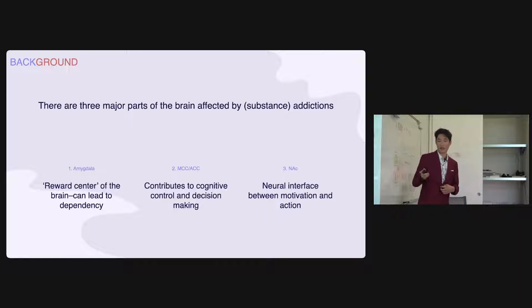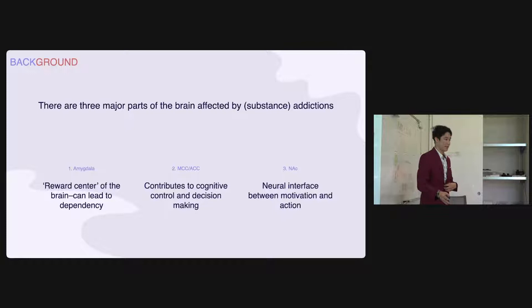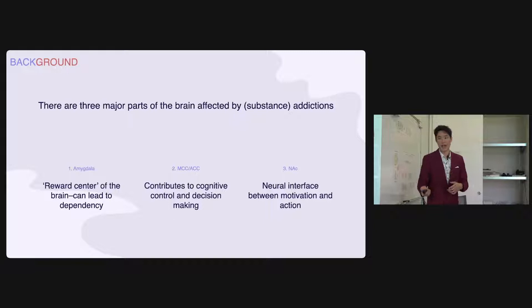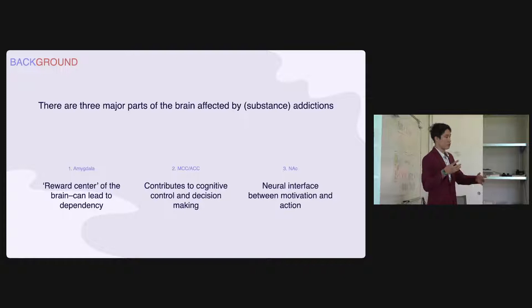Second is the mid-cingulate cortex and the anterior cingulate cortex — the MCC-ACC. These contribute to cognitive control and decision making. The MCC-ACC is what tells you whether to pick up your phone or go out with your friends, and it's part of being able to disconnect yourself from something you're currently using. This is why it's hard for me to play video games and then do homework — because my brain has been tuned to play video games. Finally, the nucleus accumbens is the neural interface between motivation and action. It's connected to the limbic system and releases dopamine when you're using something you enjoy, and it also helps you decide whether to motivate yourself to do something or just take the easy dopamine.